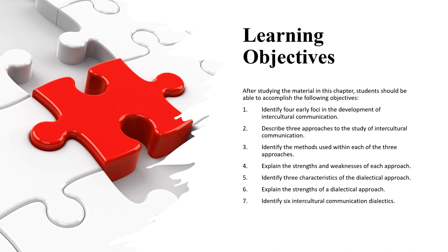Learning objectives very quickly. We're going to identify four early foci of the development of intercultural communication. Describe three contemporary approaches to the study of intercultural communication. Identify the methods used within each of the three. Explain both the strengths and weaknesses of each approach. Identify three characteristics of the dialectical approach, which is the approach we're adopting in this class. Explain the strengths of a dialectical approach. Identify six intercultural communication dialectics. We'll talk about what that means in this lecture.